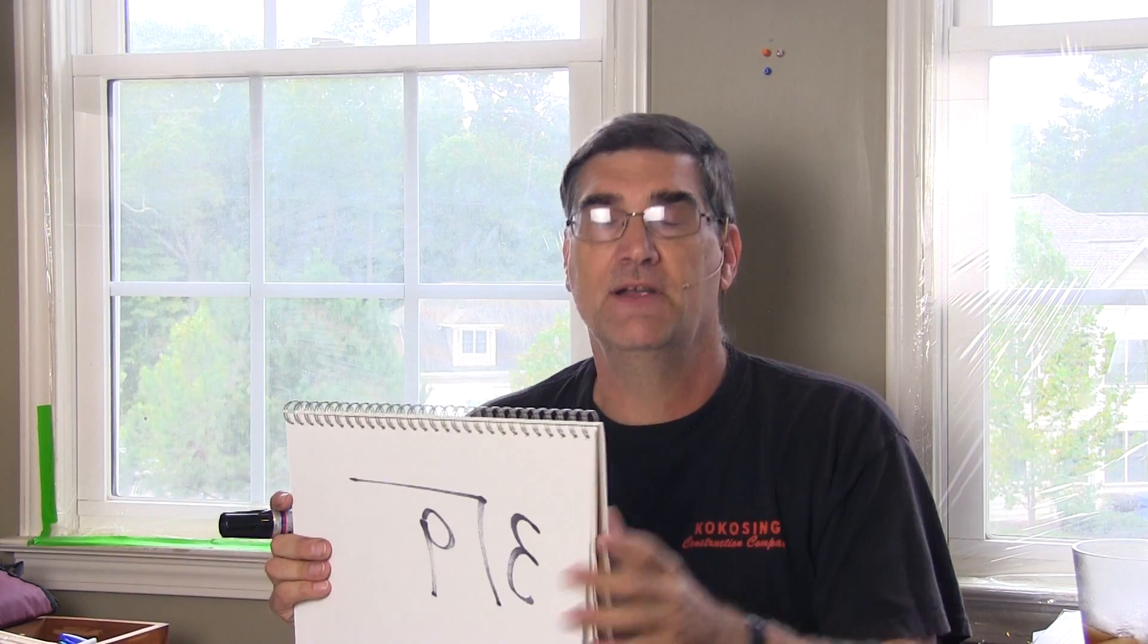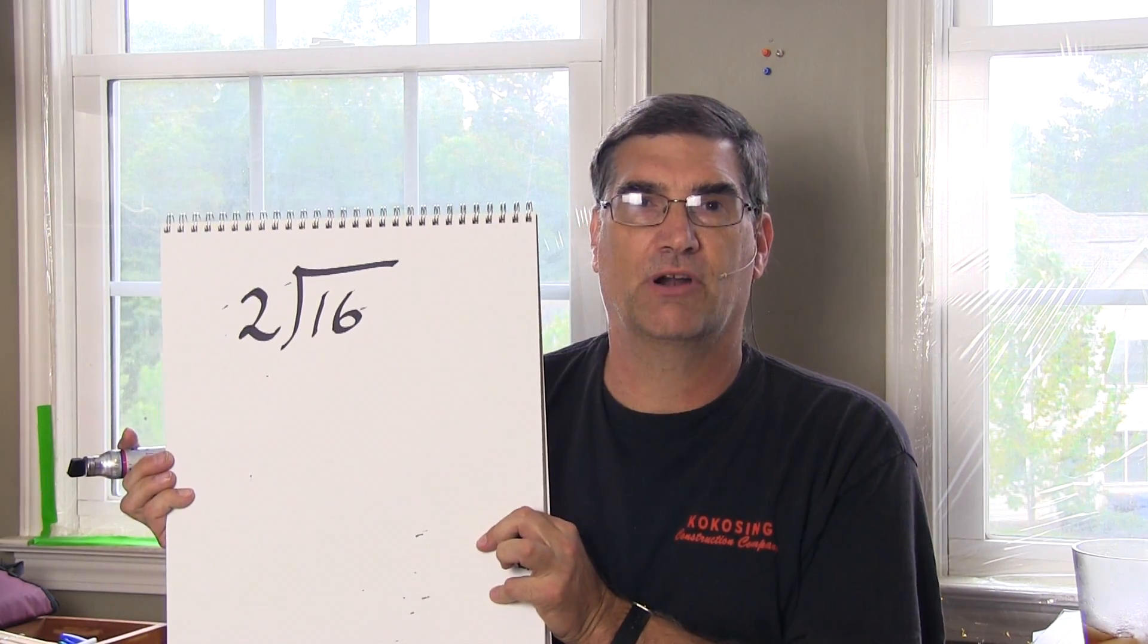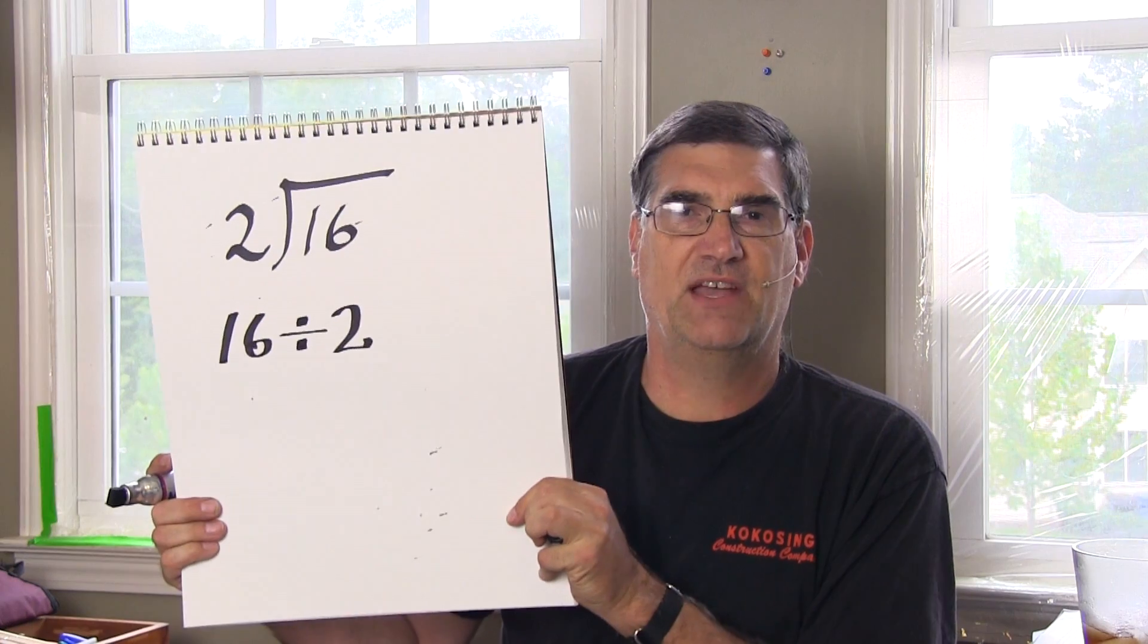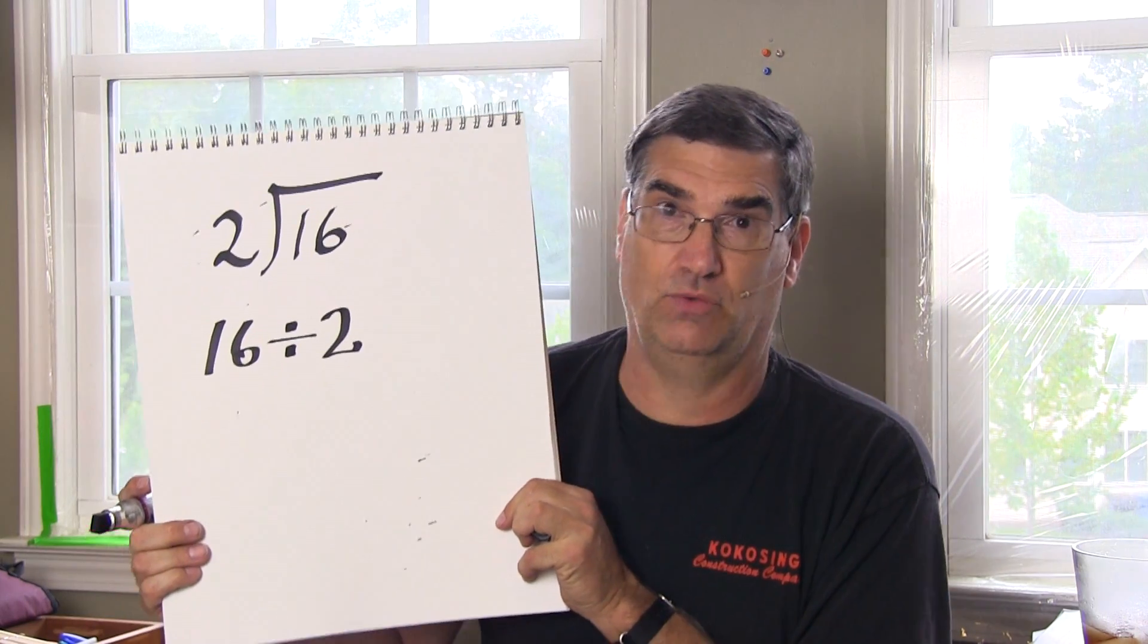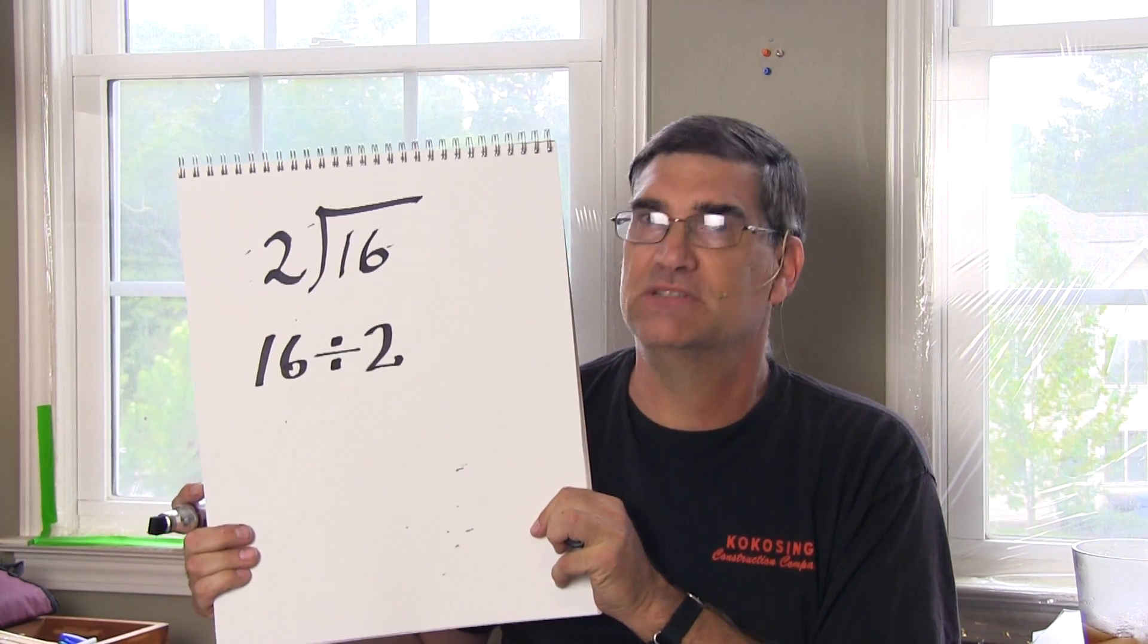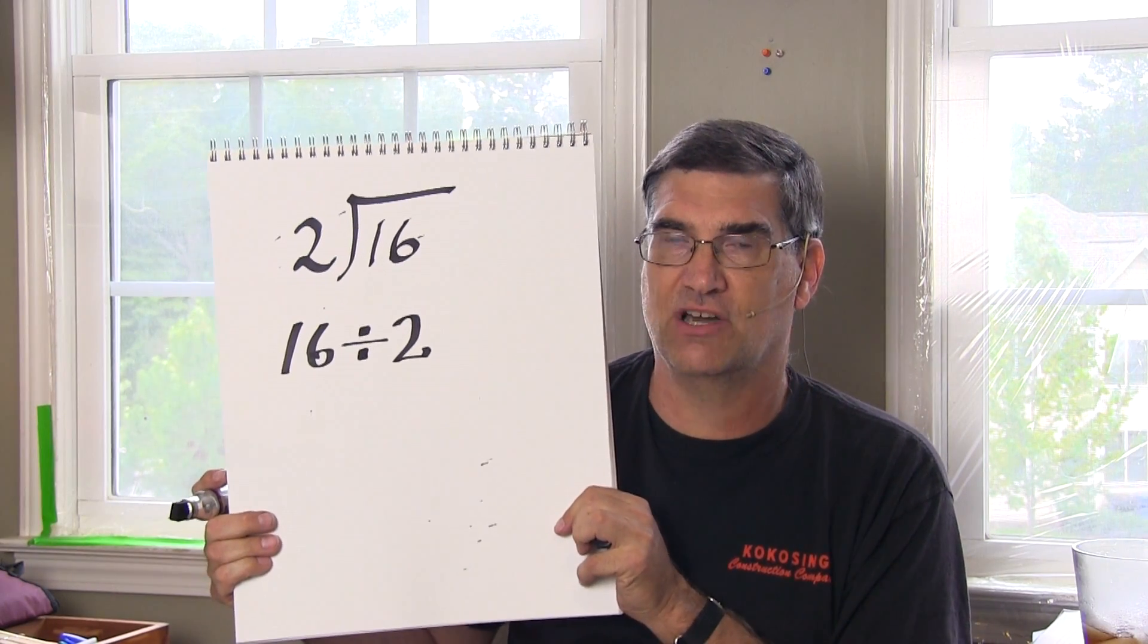So what I recommend is any time they send home a worksheet that might say this, or they might say 16 divided by two, if your kid gets a worksheet to bring home and any of either of those are there, and it's probably going to be one of the two. Now math has changed a little bit, but this is still something that doesn't get taught as regularly as it should.